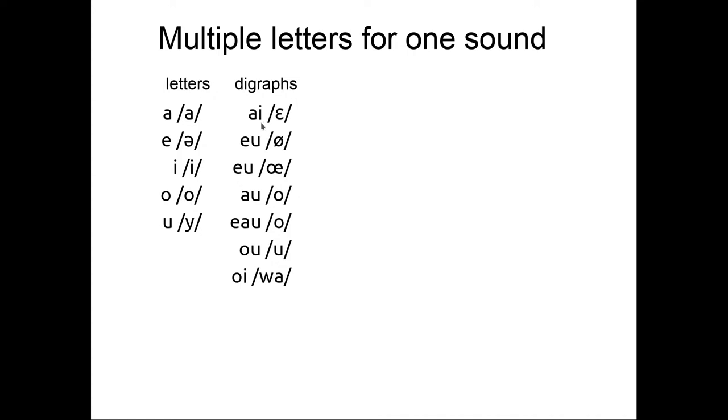So AI is pronounced E, EU is pronounced Ø, EU can also be pronounced Œ. We don't know, you have to check. AU is pronounced O. EAU is pronounced O. OU is pronounced OU. And OI is pronounced WA.